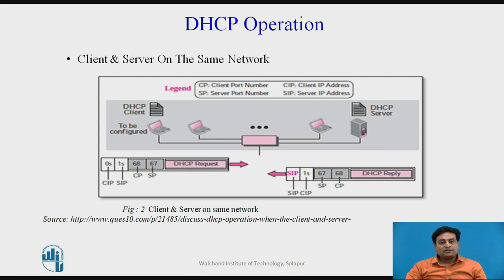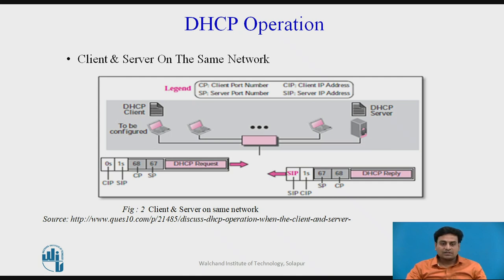The DHCP client and server can be on the same network or they could be on different networks. We will discuss each situation separately. The administrator may put the client and the server on the same network, as shown in figure 2. Please note that for a DHCP request, the client IP address is all zeros and the server IP address is all ones.